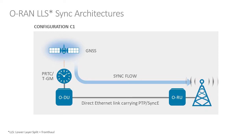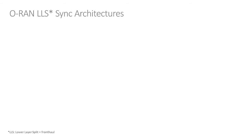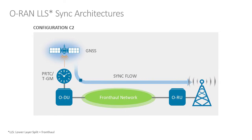For a C1 configuration, we've got the ODU and the ORU directly connected. Synchronization is going to flow from the DU to the ORU, an Ethernet link carrying PTP or SyncE. For configuration C2, which I think is going to be pretty common in deployment, we have a front-haul network in between the devices. Sync flow is still in the same direction, with intermediate devices participating and having an effect on synchronization performance.